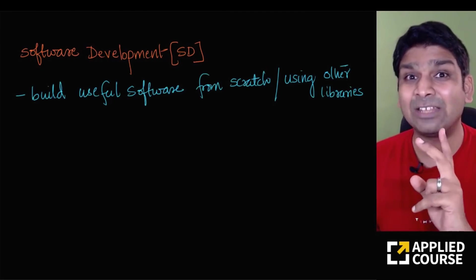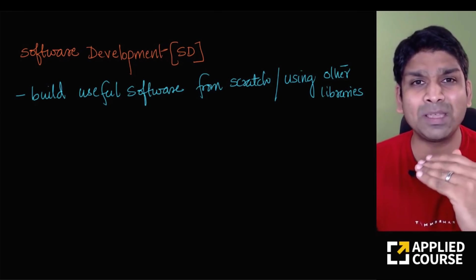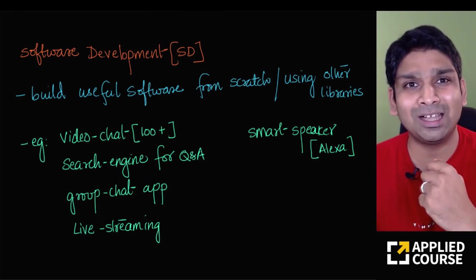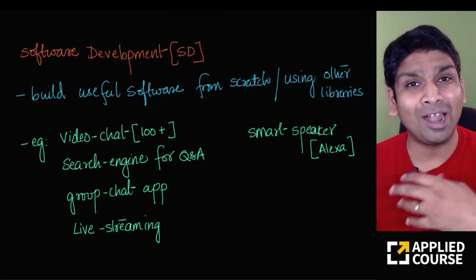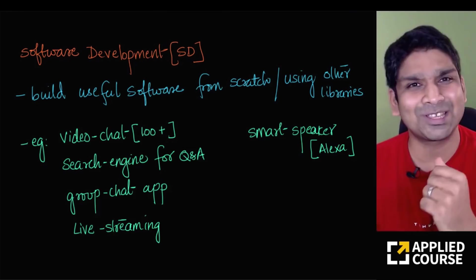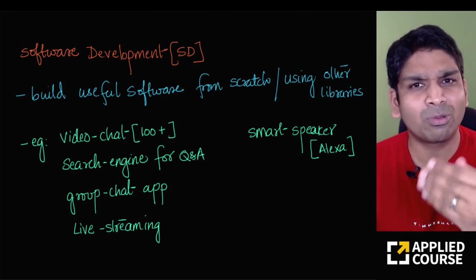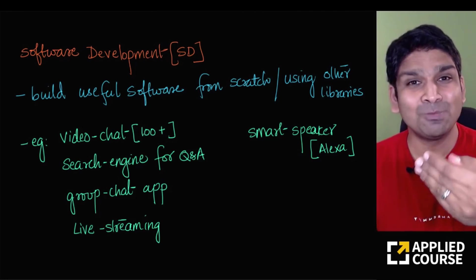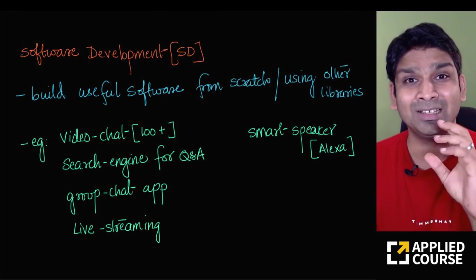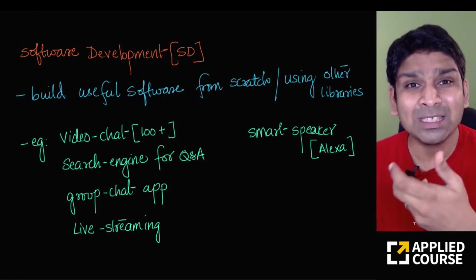Software development is slightly different. The objective of software development is to build useful software from scratch or by using other libraries or modules. For example, you might want to build a video chat application like Zoom that can accommodate up to 100 people, or a small search engine for your company. We've actually done a four-part live session where we built a production-ready search engine system, which you can watch on our YouTube channel.